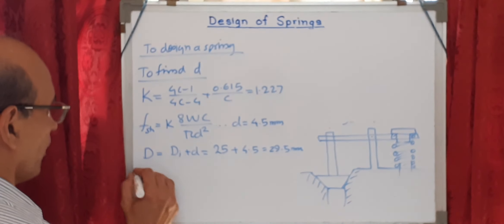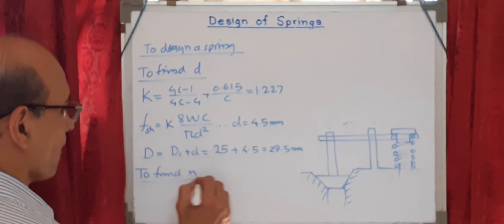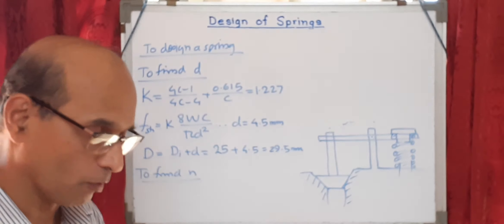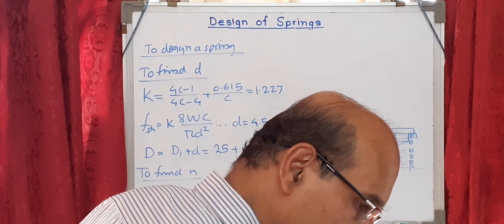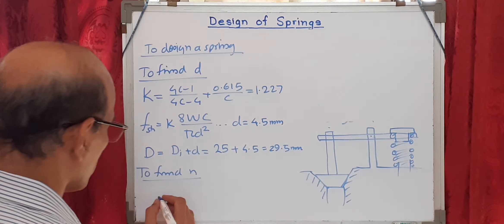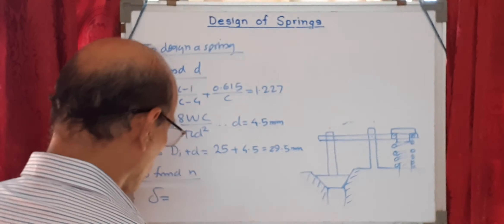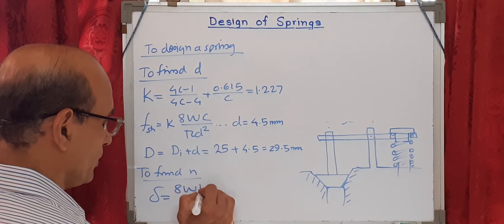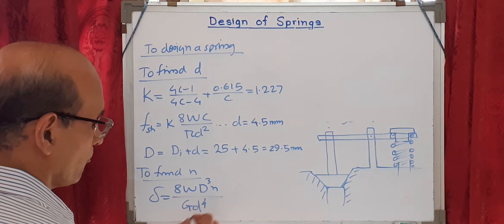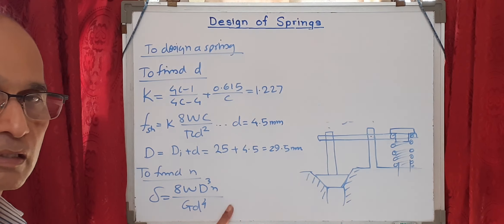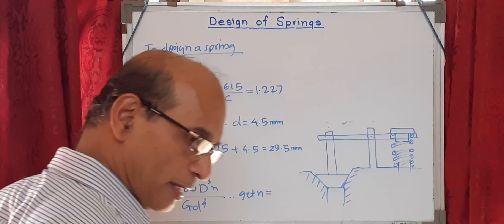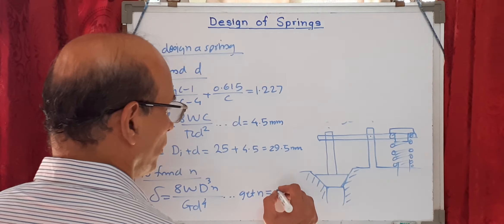Next, find the number of active turns N. Using the deflection formula delta equals 8·W·D³·N upon G·d⁴, and substituting all the available values, N comes out to 14.3. This is rounded up to 15 — the immediate higher integer. As a result, the total number of turns N' equals N plus 2, which is 17.